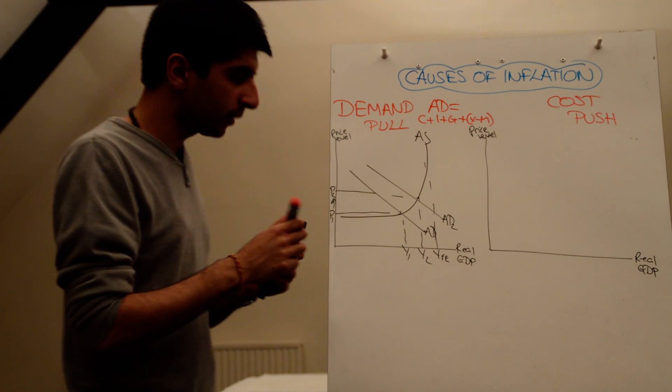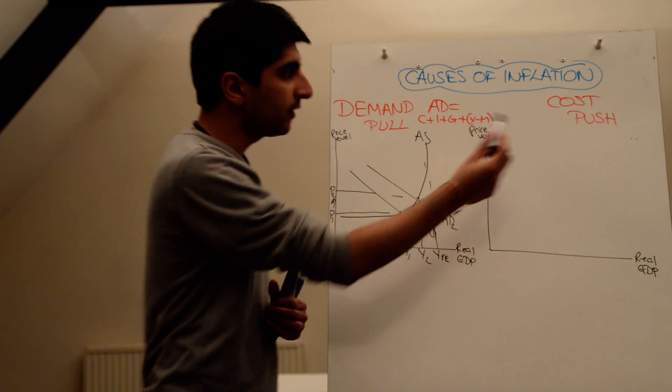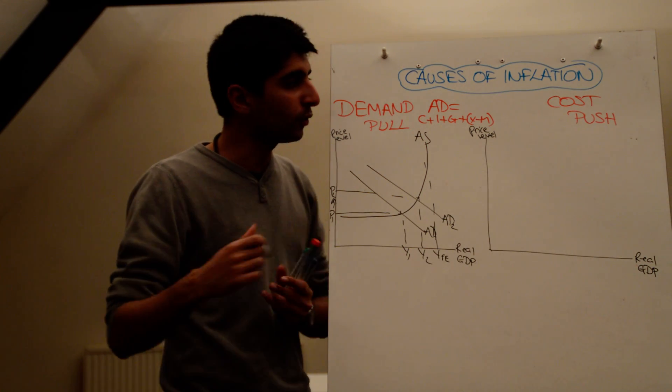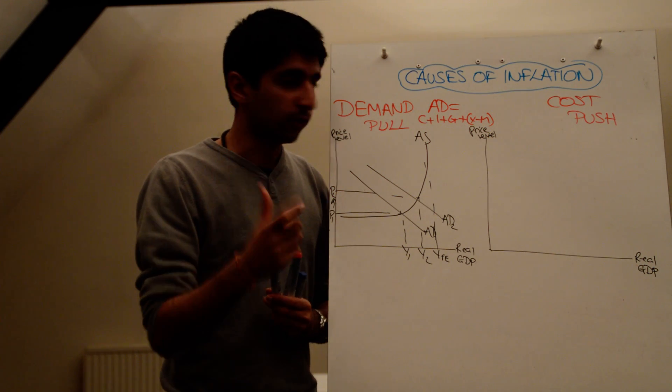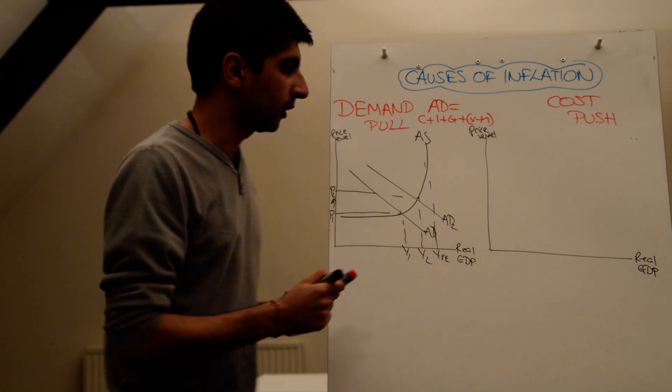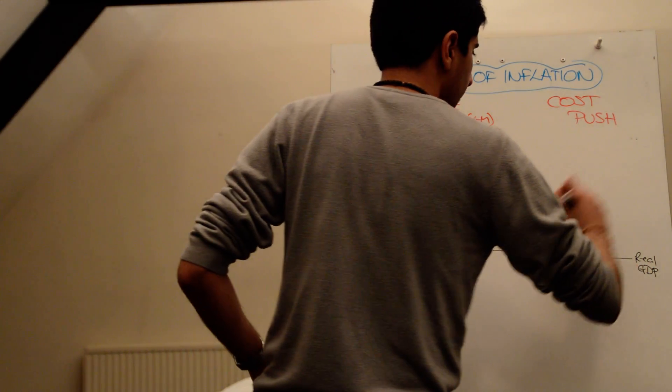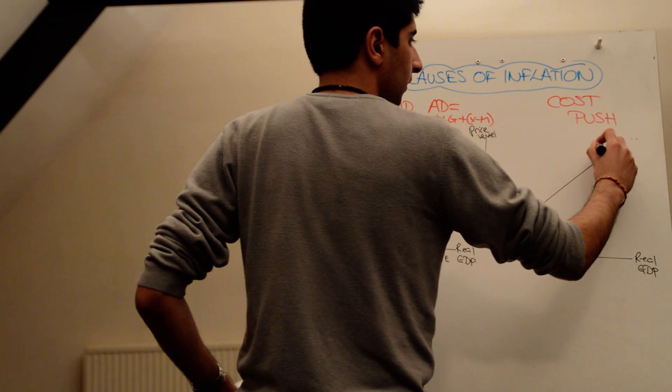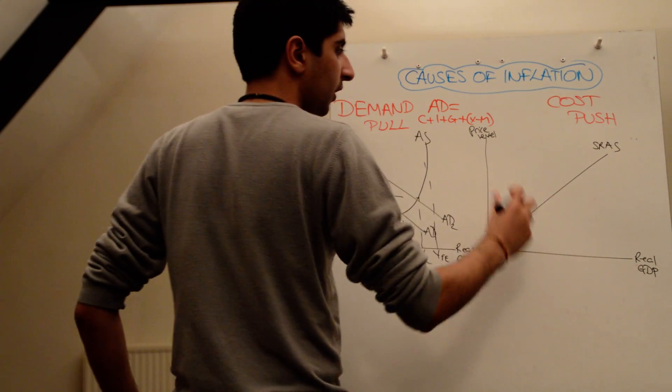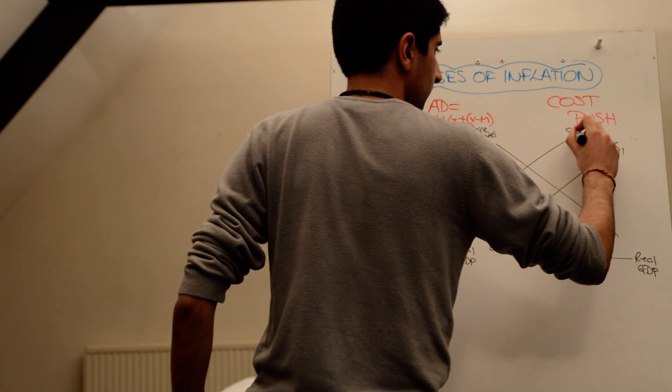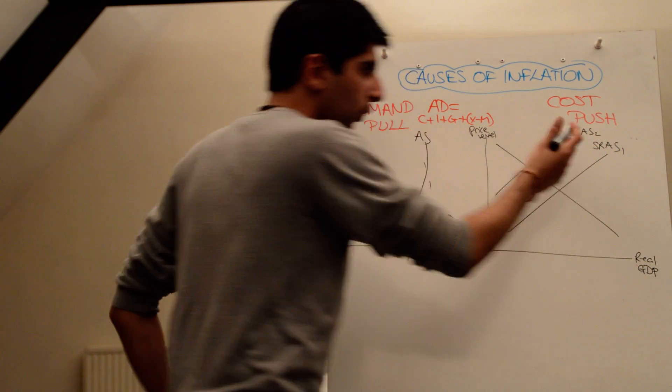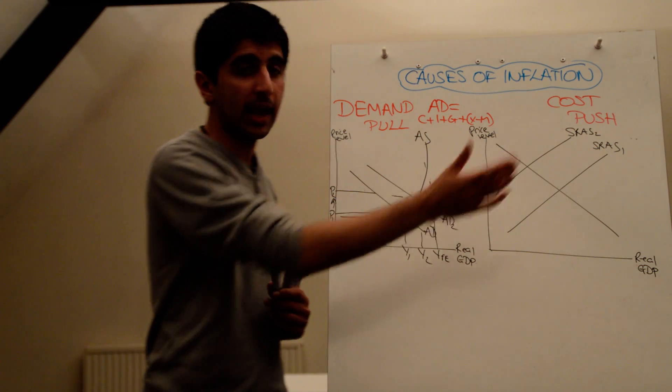What about cost push inflation? What does that look like in the diagram? Well, this is all about supply side shocks. It's not to do with long run supply. It's all to do with short run aggregate supply shocks, supply side shocks. So for short run aggregate supply, you use this supply curve. If you want to call it S or AS, you can. If you just want to call it AS, it doesn't matter.